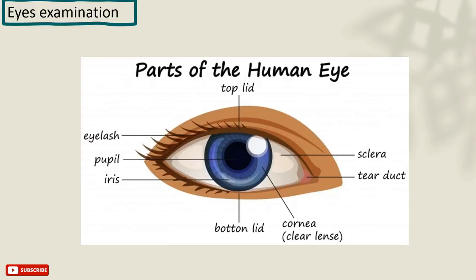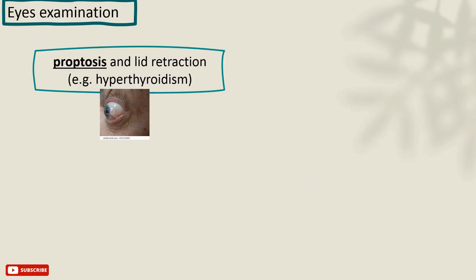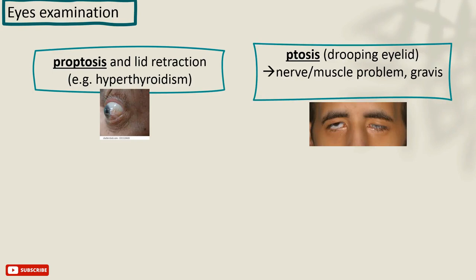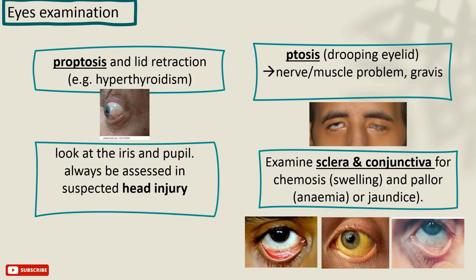Moving to the eye examination. Notice if there is any proptosis, lid retraction, or exophthalmos of the eyeball, as seen in cases of hyperthyroidism. Also notice ptosis or drooping eyelid, sometimes called a lazy eye, which could indicate a nerve or muscle problem like Graves' disease. Examine the sclera and conjunctiva as explained earlier, and also look at the iris and pupil to assess for any suspected head injury.